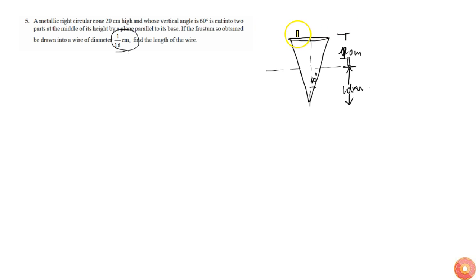This frustum, this above part, is melted and made into a wire of some particular diameter, and we are asked what will be the length of the wire. That means volume of wire is equal to volume of frustum.